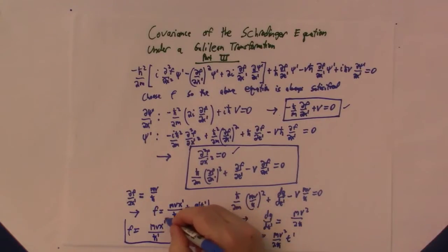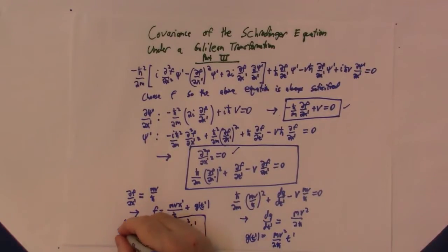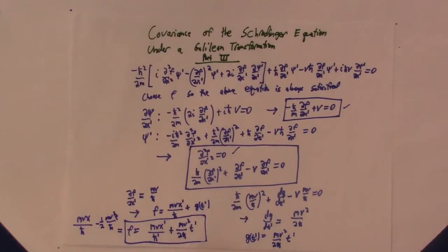So in a sense we've now accomplished our goal. We've shown that we can find an f. By the way, this can also be written in terms of x and t, just by using the Galilean transformation: f equals mvx over h bar minus one half mv squared t over h bar. Just substitute x prime equal x minus vt and you'll get that.